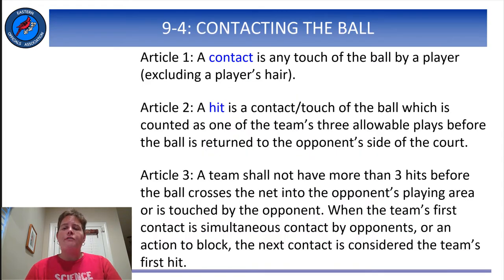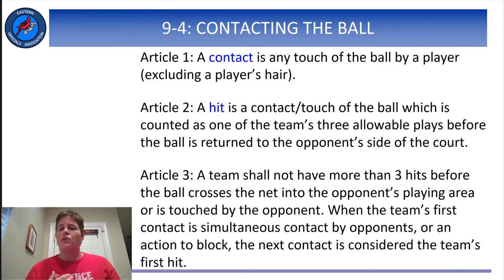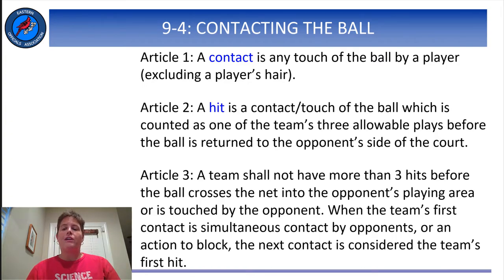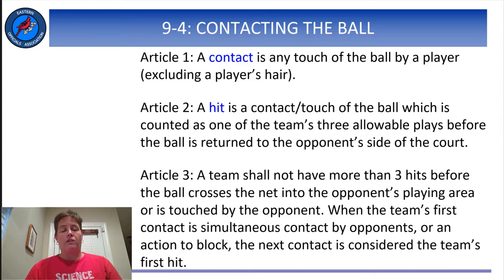We referees often use the term contact interchangeably with the word hit, but as we can see in the first two articles of this rule, the two terms are not synonymous. A contact includes any touch on the ball, such as a pass, set, attack, or a block. Whereas when we count to three for each team, we are counting team hits. Article 3 clarifies that neither a block nor a simultaneous contact by opponents — usually referred to as a joust — counts as one of the three team hits. In this way, the term hit is more restrictive than the term contact.